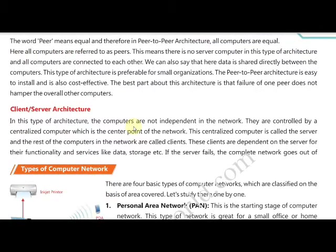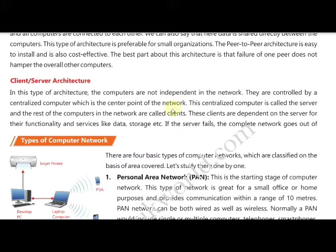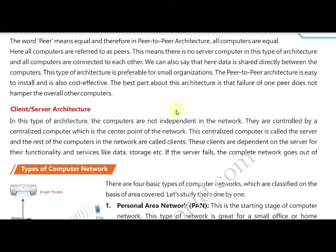In client-server architecture, clients are connected to a host or server. The server is a highly configured, expensive machine with special features such as managing other clients and setting access rights. It requires a network operating system to handle all clients, making it expensive and quite difficult to install. Whenever the server fails, the entire network collapses — that is the drawback. However, it is more effective than peer-to-peer because it has a dedicated machine providing services to clients.